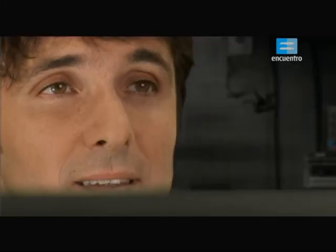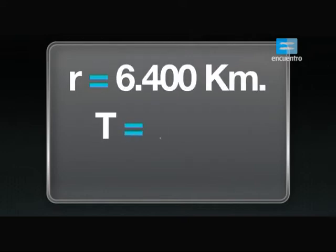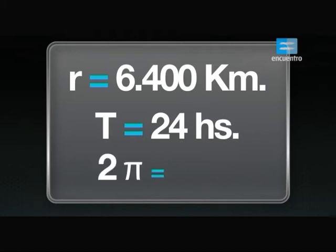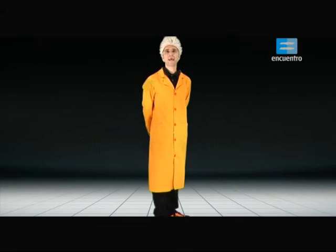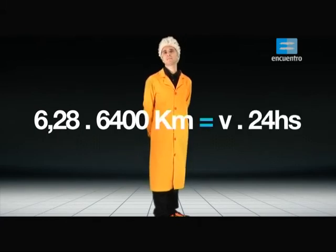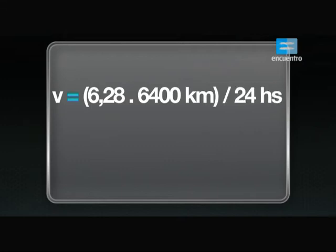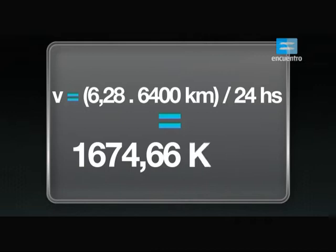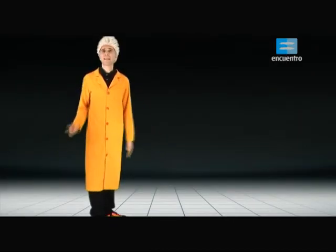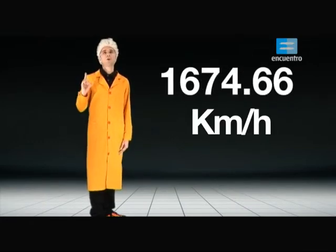Por lo tanto: R igual a 6.400 kilómetros, T igual a 24 horas, 2π igual a 6,28. Reemplazando en la expresión anterior, obtenemos la ecuación 6,28 por 6.400 kilómetros igual a V por 24 horas. Resolviéndola: V igual a 6,28 por 6.400 kilómetros dividido 24 horas, igual a 1.674,66 kilómetros por hora. Es decir, que debemos darle una velocidad de 1.674,66 kilómetros por hora al satélite.